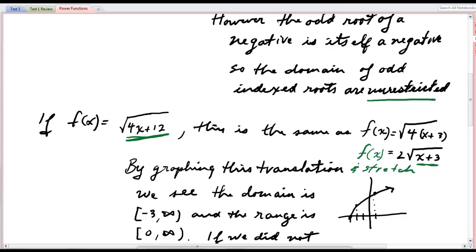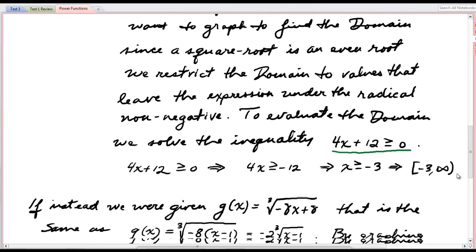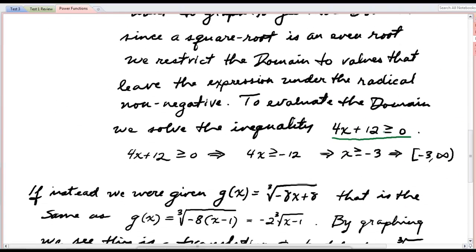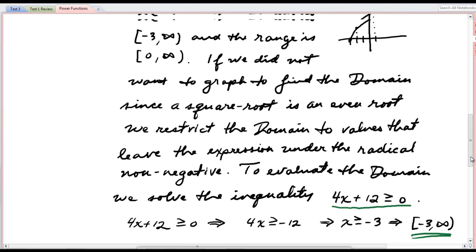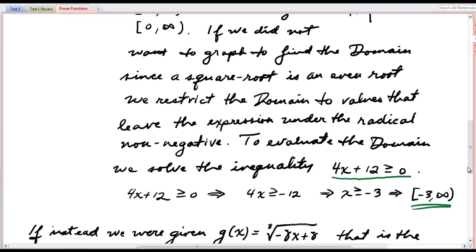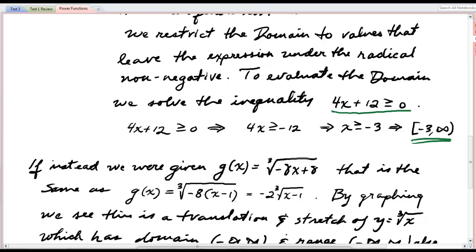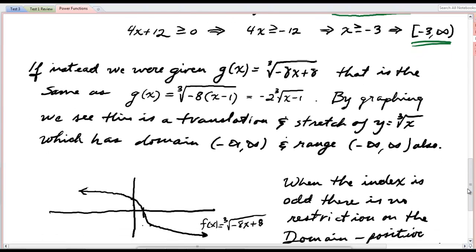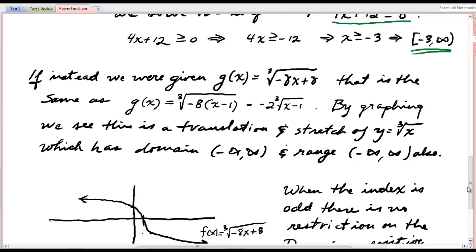And since whatever the argument is, it better not be negative, I say that 4x plus 12 must be greater than or equal to 0. And solving that, we get the same thing. Okay? So we can either graph it, but that's not always so easy. Or we can set what's under the radical greater than or equal to 0 and find the domain that way. Again, that's a technique we teach in intermediate algebra and we've already talked about this year.